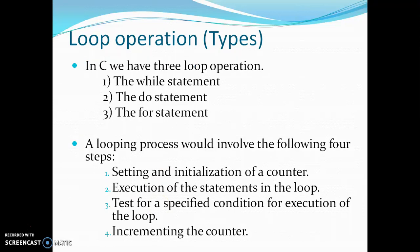There are three types of loops: the first one is while loop, the second one is do-while loop, and the third one is for loop. For a looping statement process, we have to follow four steps: first, setting and initializing the counter; second, execution of the statement in the loop; third, testing for a specific condition for execution of the loop; and fourth, incrementing the counter.